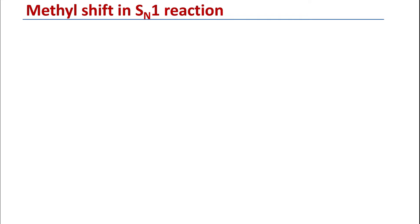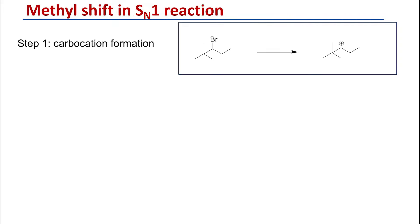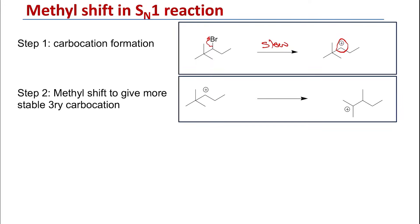We can also see methyl shift in the SN1 reaction in the same way. The first step will be carbocation formation, where the bromide will leave — this is the slow step — and that will generate the secondary carbocation. We then see that this secondary carbocation has adjacent to it a quaternary carbon. There will be a methyl shift where the methyl group is shifted towards the secondary carbocation, generating a tertiary carbocation on the adjacent carbon, which is more stable.